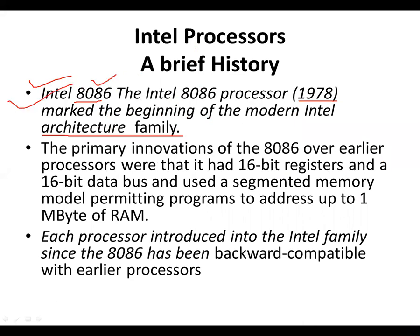Now we have the name of the X86 architecture. All of this is related to the 8086 processor — that is where the X86 family name comes from. The 8086 architecture is still maintained in your Pentium, dual-core, and quad-core processors. That's why we say 8086 is the foundation for the entire processor family.